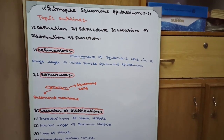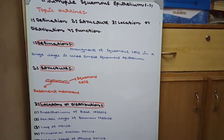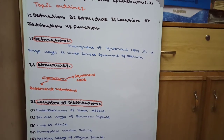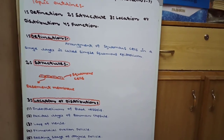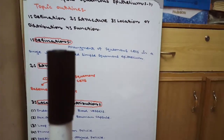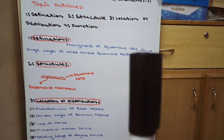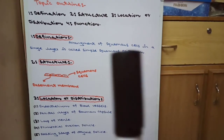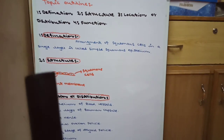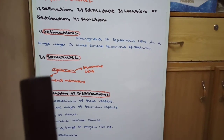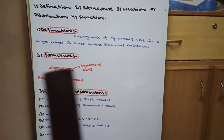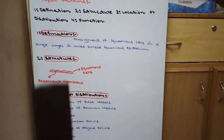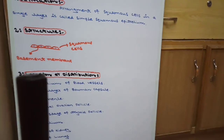First we start from the definition. Basically, the definition of simple squamous epithelium is the arrangement of squamous cells in a single layer. Because simple epithelium is an arrangement of cells in a single layer, the arrangement of squamous cells in a single layer is called simple squamous epithelium.